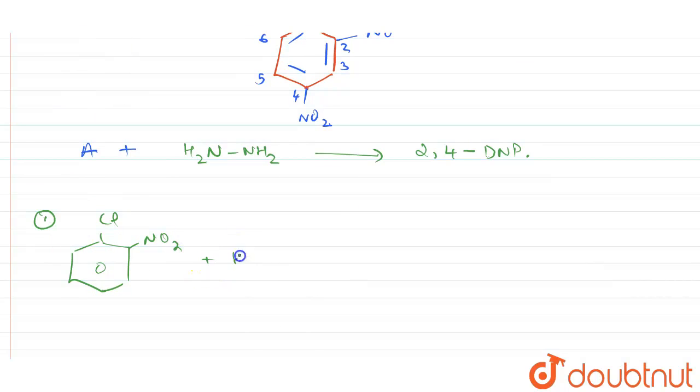Option A: Cl to the ortho position, to this we have NO2 group. We are treating this with H2N-NH2. So it is very much clear that it is not going to give us 2,4-dinitrophenol. Here what will happen, one of the H from here and Cl from here will be removed as HCl. Heating is done.